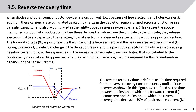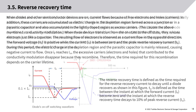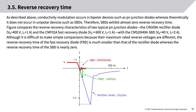The time required for recombination depends on the carrier lifetime. Reverse recovery time is defined as the time required for the reverse recovery current to decay until the diode recovers. TRR is defined as the time between the instant at which forward current IF becomes zero and the instant at which the reverse recovery current decays to 10% of peak reverse current IRR.